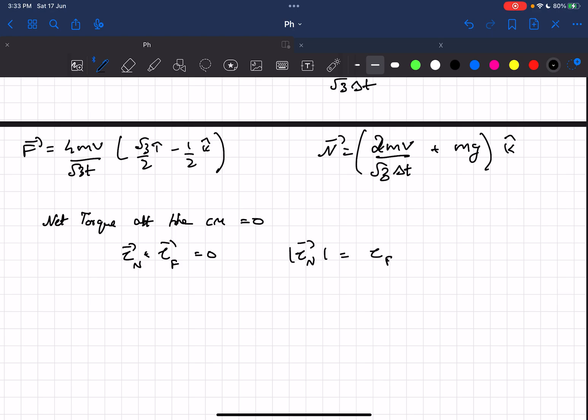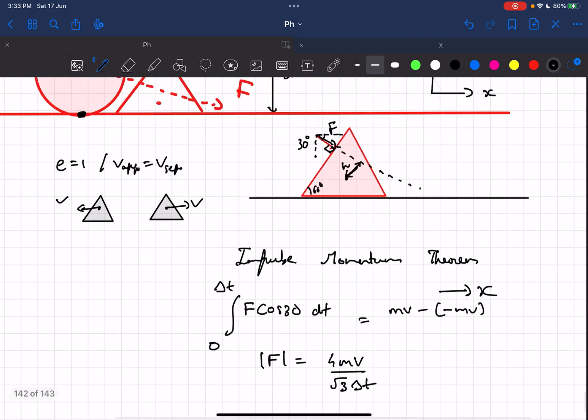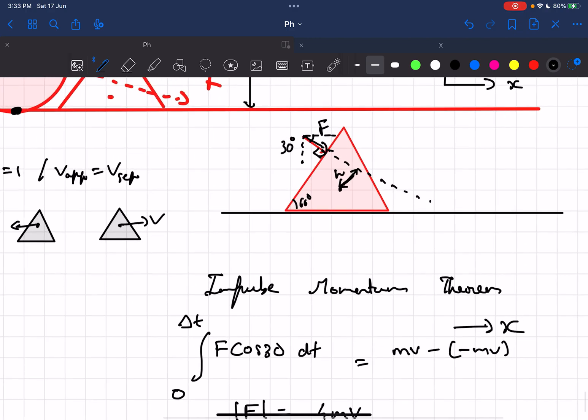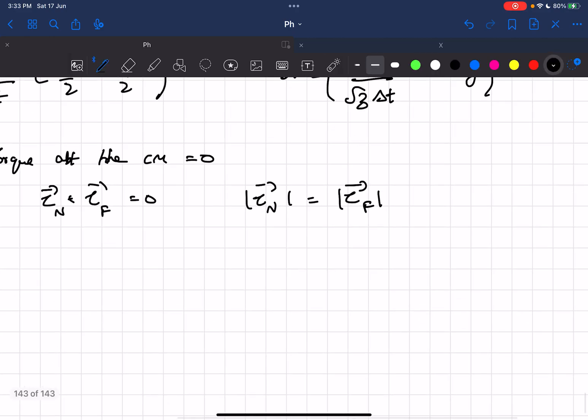They just ask the magnitude of it, so we can write the magnitude of torque of normal is the same as the magnitude of the torque due to force F. Torque due to force F is very easy to write because they've given the perpendicular distance to be h, so it will be the force times the perpendicular distance. It will be F into h, which would be 4mv by root 3 delta t times the height h.